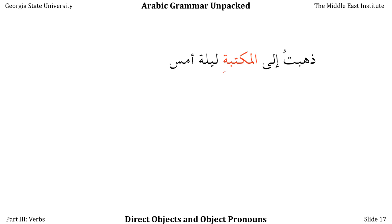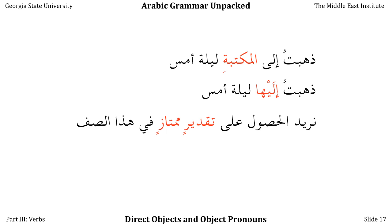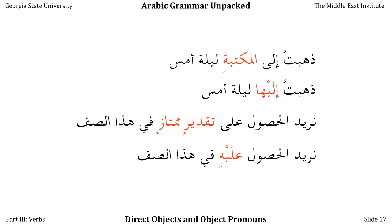Some prepositions cause spelling irregularities when combined with pronouns. ذَهَبْتُ إلى المكتبة ليلة أمس — المكتبة is feminine singular, so replaced with هـا, but it becomes ذَهَبْتُ إليها ليلة أمس, where the ألف مقصورة in إلى changes to a ياء with a سكون. Similarly, نريد الحصول على تقدير ممتاز في هذا الصف becomes نريد الحصول عليه في هذا الصف. The best way to learn these is to read a lot, pay attention to how prepositions adapt to pronouns, and you'll pick up the major patterns.